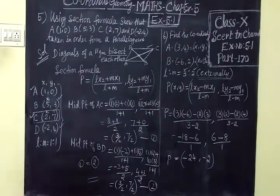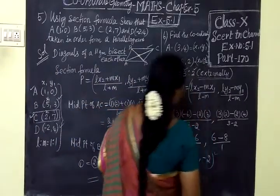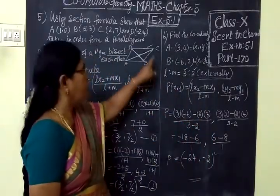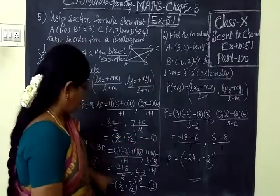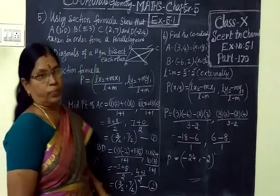Answer is minus 24, minus 2. So this answer is correct for the 6th one. And the midpoints are equal. So they make the parallel. Thank you.